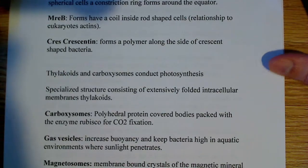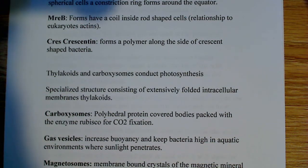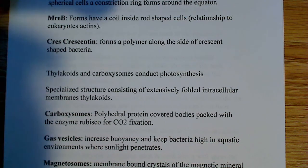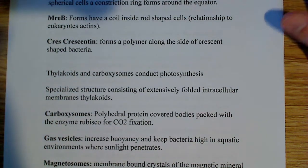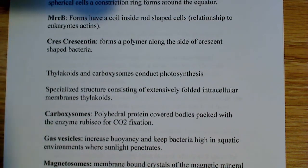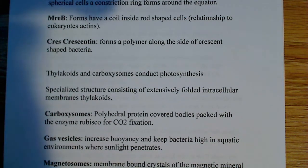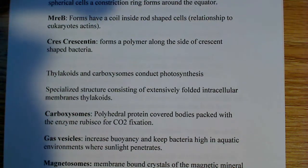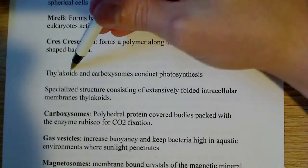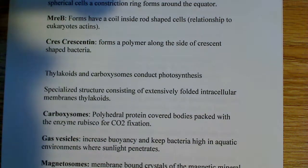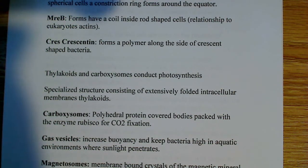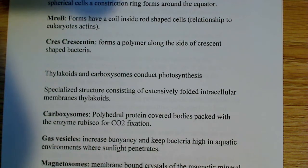Next I want to talk about thylakoids and carboxysomes, which you might remember from plant physiology, that these are involved in photosynthesis and carbon fixation respectively. Again, people say there are no specialized structures in bacteria, but there are some specialized structures you can find, and two of those are thylakoids and carboxysomes. They're specialized structures consisting of extensively folded intracellular membranes — that's what a thylakoid is — extensively folded stacked membrane structures.